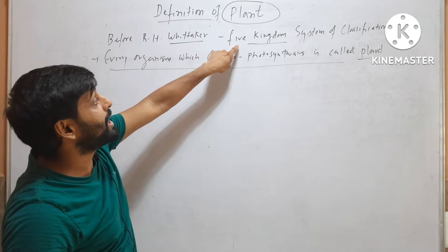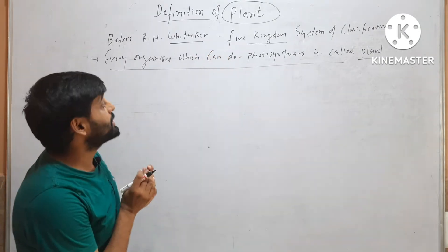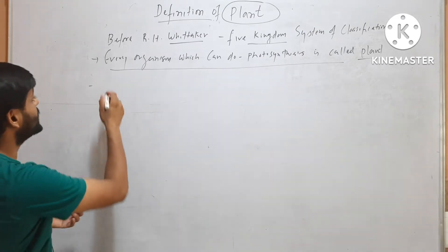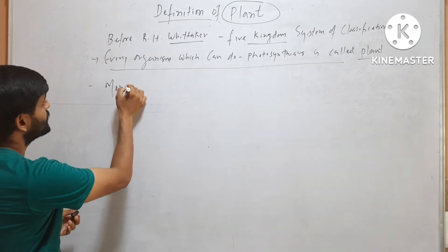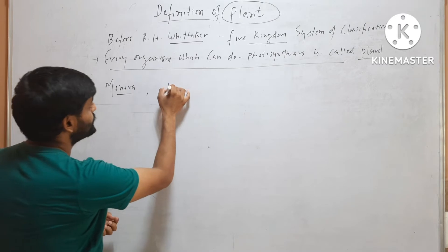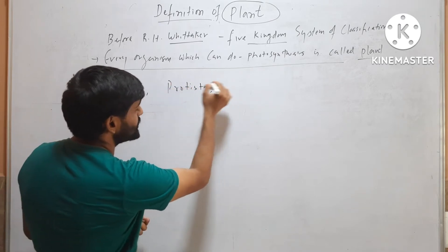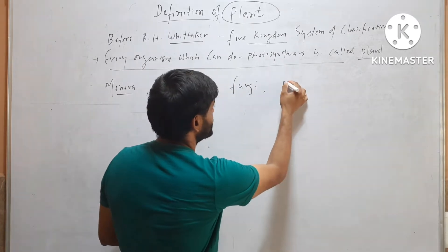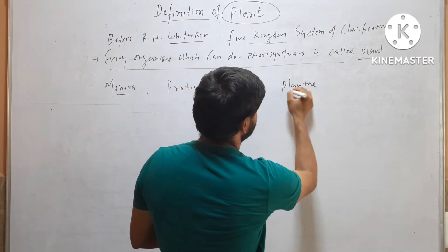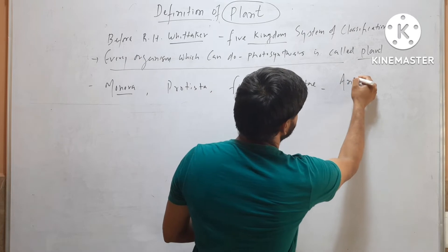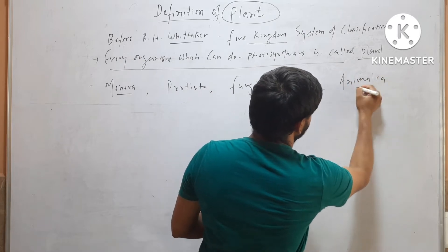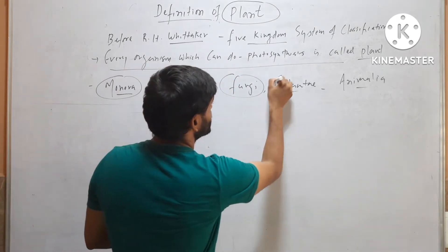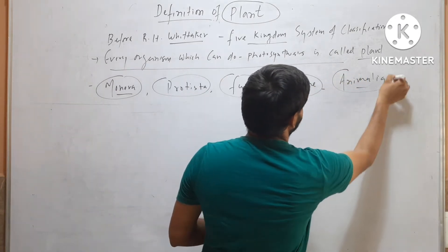But R.H. Whittaker gave the 5-kingdom system of classification and he divided organisms into Monera, Protista, Fungi, Plantae, and Animalia. So, he divided all the living organisms into 5 categories.